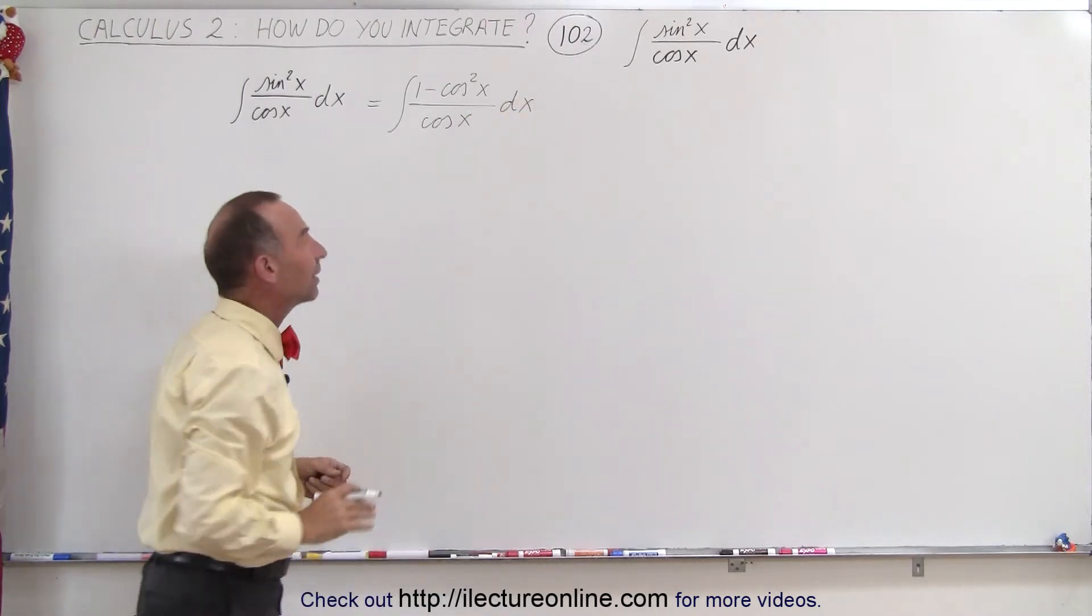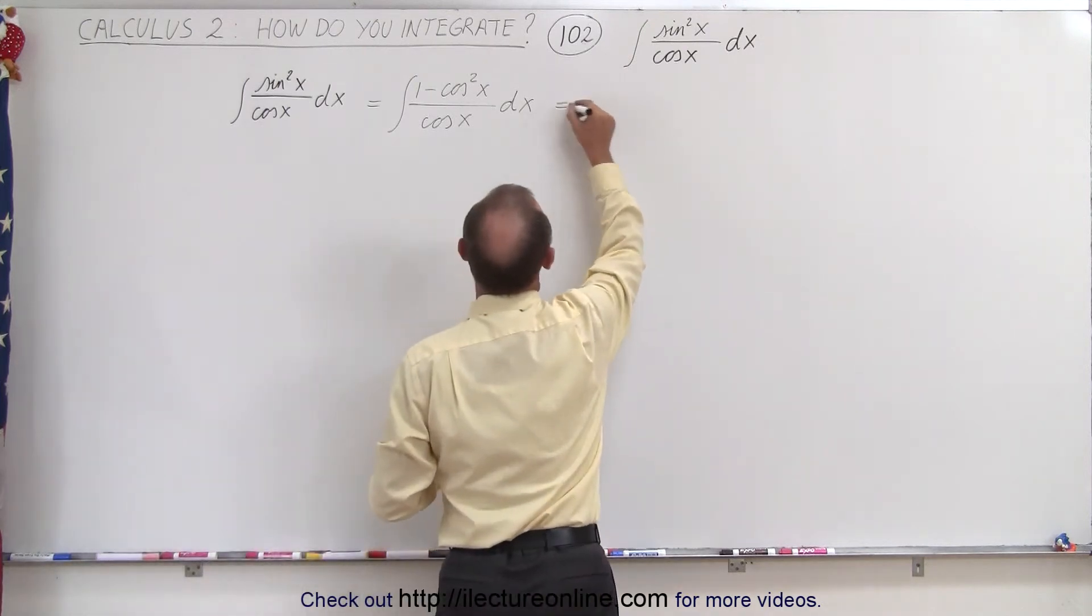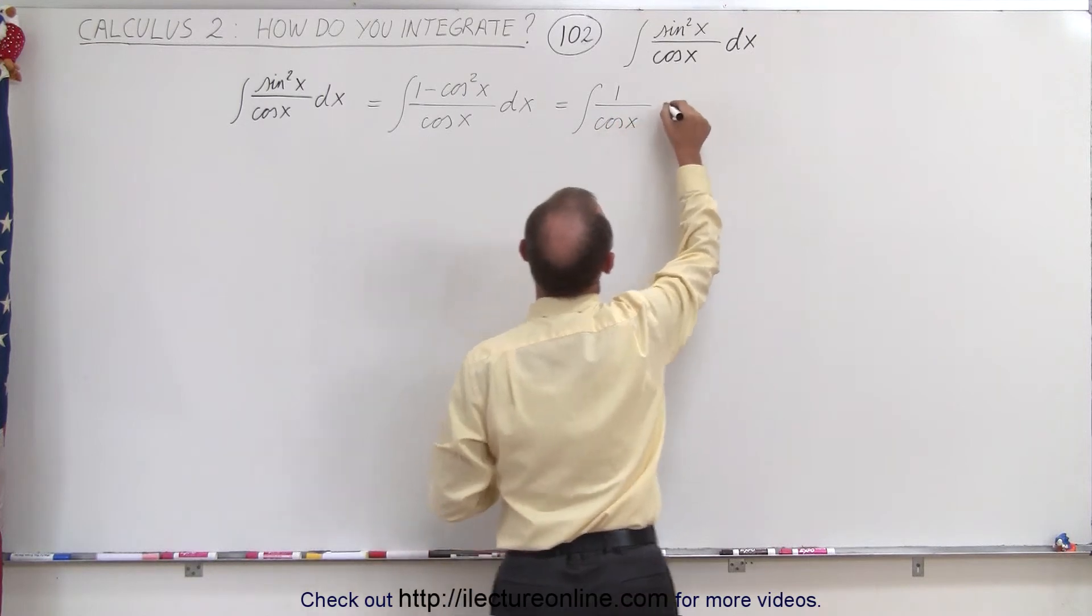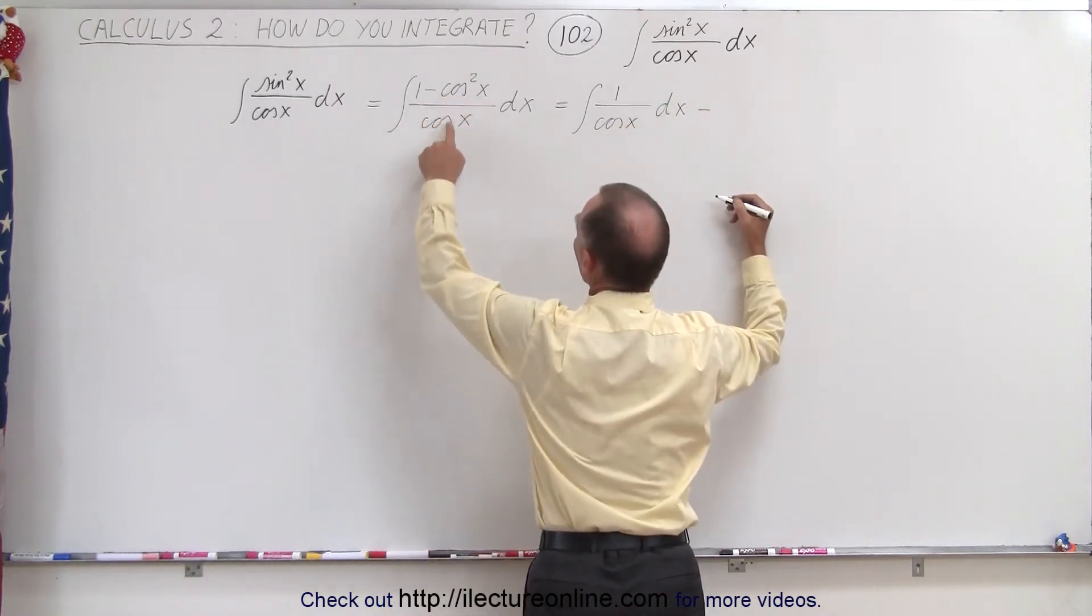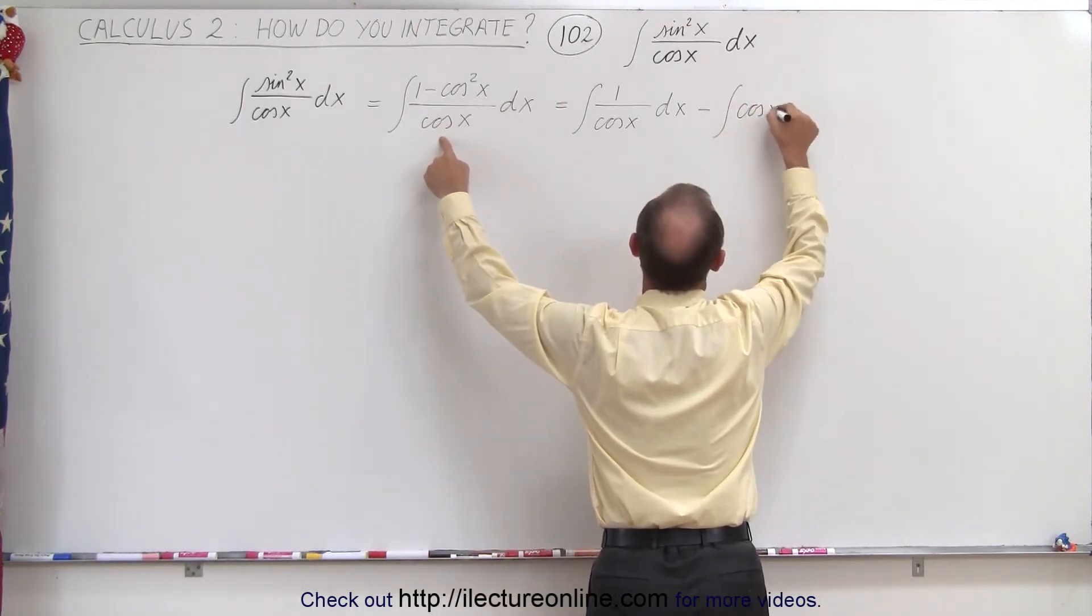And then if it's written like this, we can write it as two separate integrals. So this can be written as the integral of 1 over the cosine of x dx minus, because we have a minus sign, the cosine squared divided by the cosine is equal to the cosine of x dx.